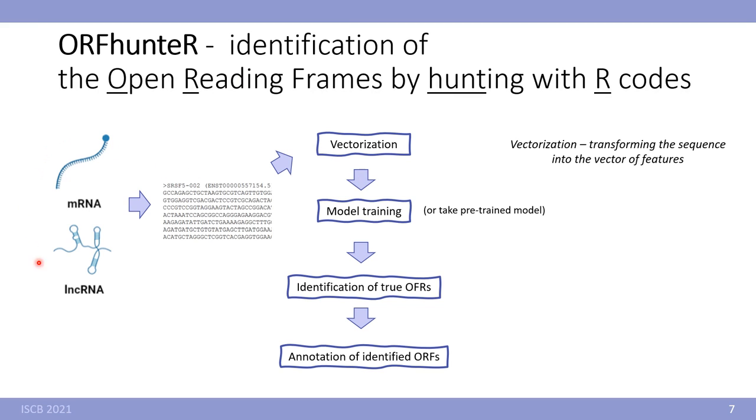In our pipeline we are working with sequencing data of transcripts and the first step is vectorization. Vectorization is the process of transforming sequence data into the vector of features. After vectorization we have classical machine learning table with numerical features. Next step is model training. You can train model on your own data or take our pre-trained model. Next is identification of the open reading frames and annotation of them.